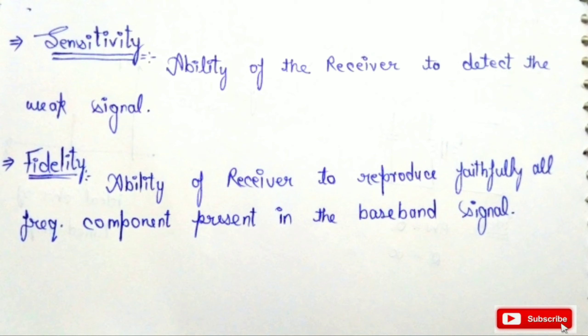The next property of the receiver is fidelity. Fidelity is the ability of the receiver to faithfully reproduce all the frequency components present in the baseband signal. For example, a voice signal has a frequency range of 300 Hz to 3.5 kHz as the standard value. A receiver should have the ability to reproduce all frequencies in that range faithfully.